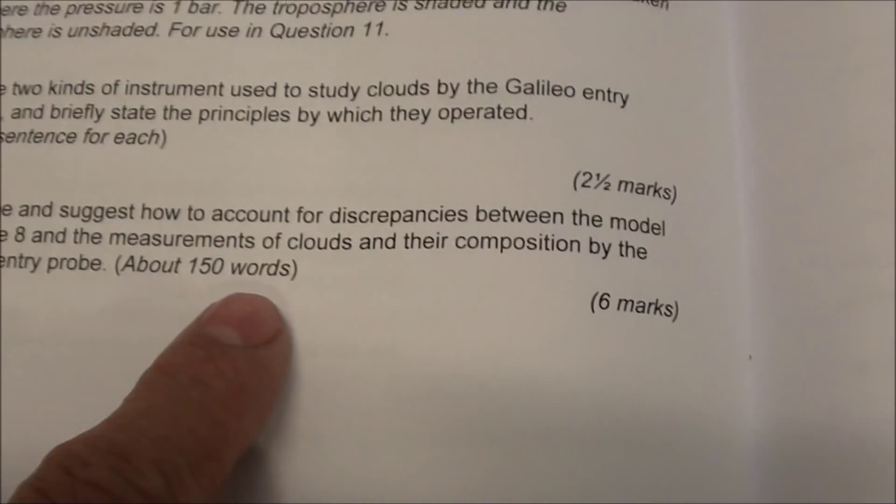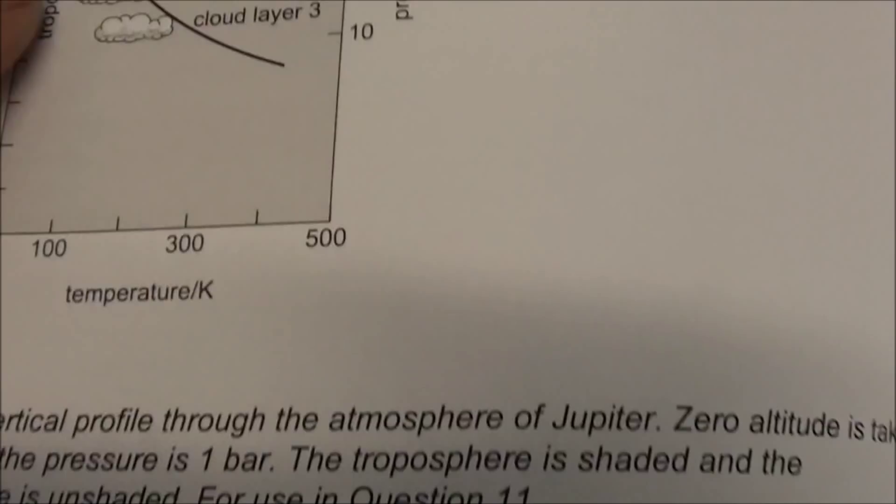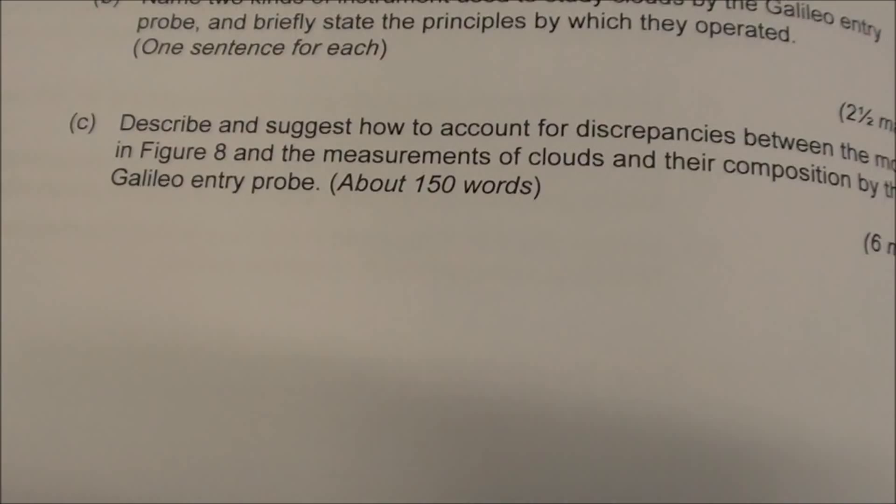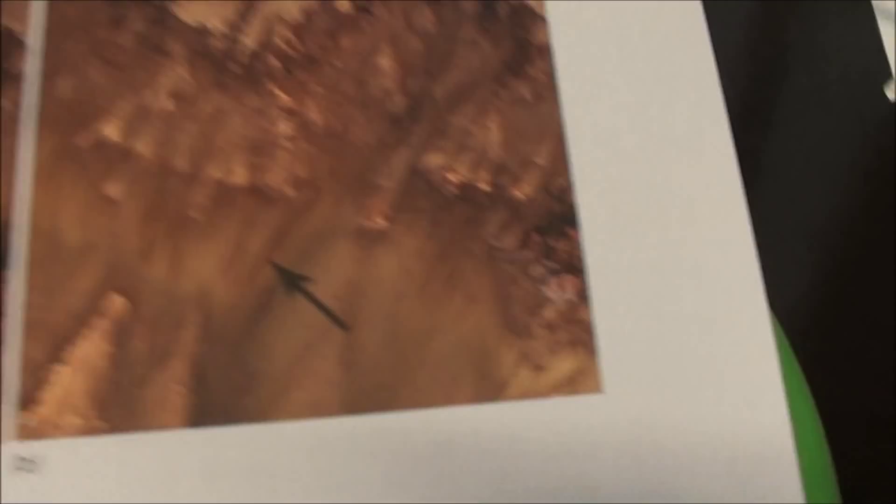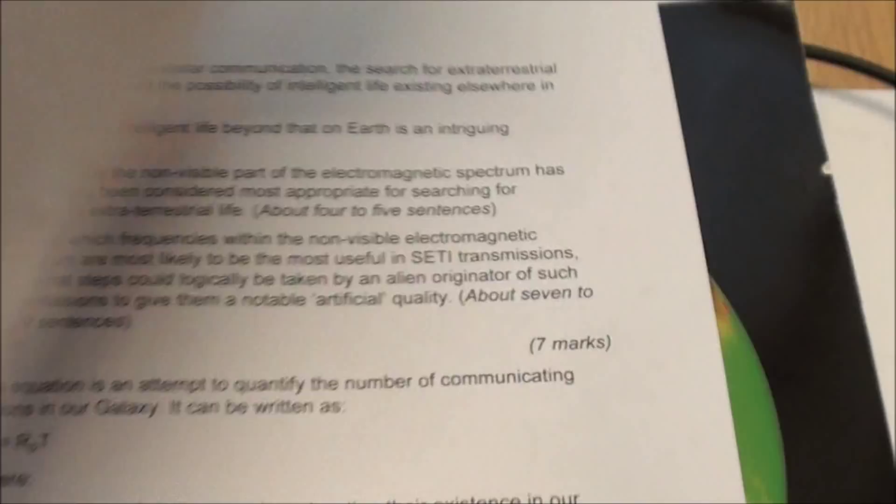But we also asked what physical state. So even if you didn't know the chemical composition, you would have got a mark each time for saying this is particles of ice, particles of ice, particles of ice. Not solid particles, not liquid droplets. So depending on how much you know, you can score more or less marks. We asked you what instruments we used to study the clouds, and then account for discrepancies between the model in that figure and measurements that were made when the Galileo entry probe visited Jupiter. Even if you know nothing about what these layers are actually of, you should understand why there can be discrepancies between the model that derived these and what a probe found. So it's understanding the science rather than memorising facts that's important.